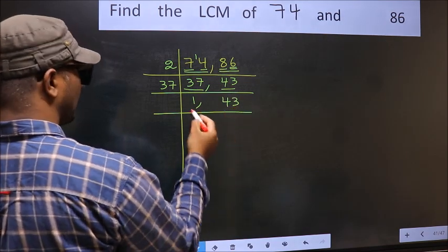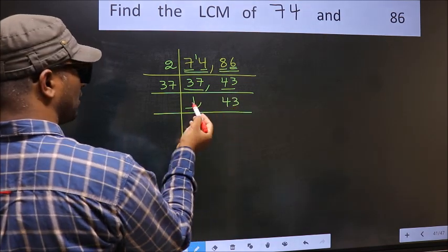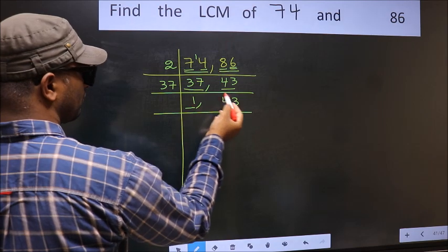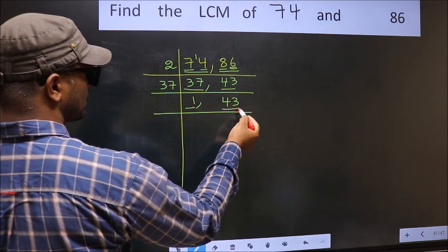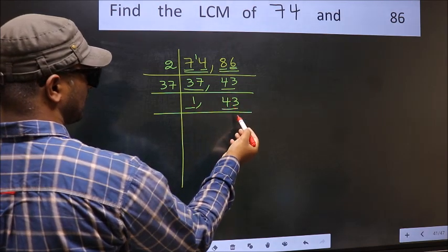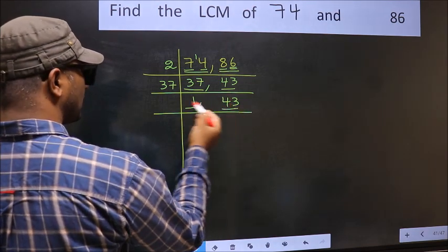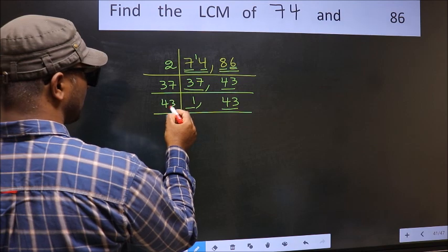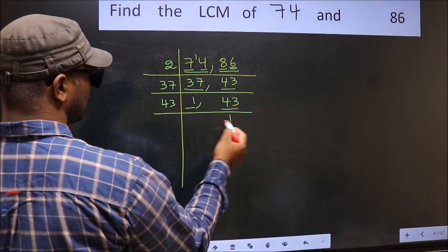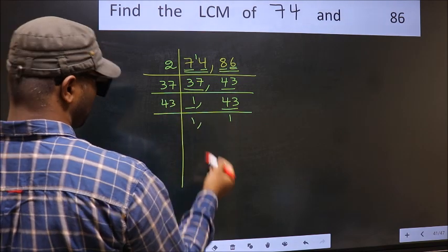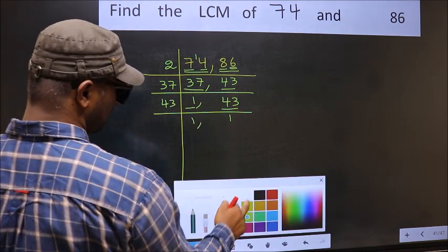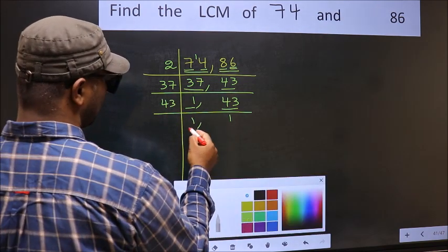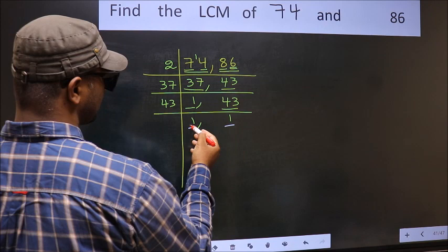Now we got 1 here, so focus on the next number, 43. 43 is a prime number, so 43 once is 43. We now have 1 in both places.